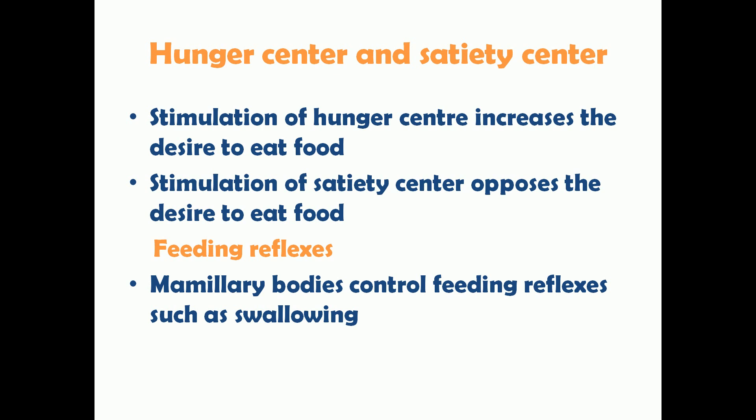The hunger center and satiety center in the hypothalamus regulate feeding. Stimulation of the hunger center increases the desire to eat food, while stimulation of the satiety center decreases that desire. When you are hungry, the hunger center in the hypothalamus is stimulated; when you are full, the satiety center is activated and reduces the desire to eat.